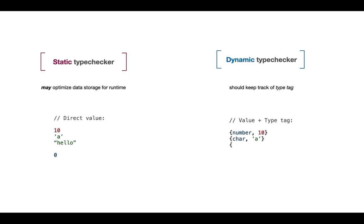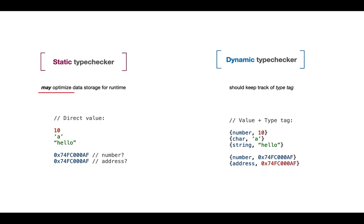A language which leverages the static type checker may optimize data storage for runtime — though it's not required. An example is C++, which works with raw values represented as-is without extra information, which can be a problem. In C or C++, if we reinterpret some bit pattern, we cannot say whether it's a number or a memory address — a pointer. In a dynamic language like EVA's virtual machine implementation, a value is usually represented as a structure containing a type tag plus the actual value, making it easy to differentiate numbers from addresses.